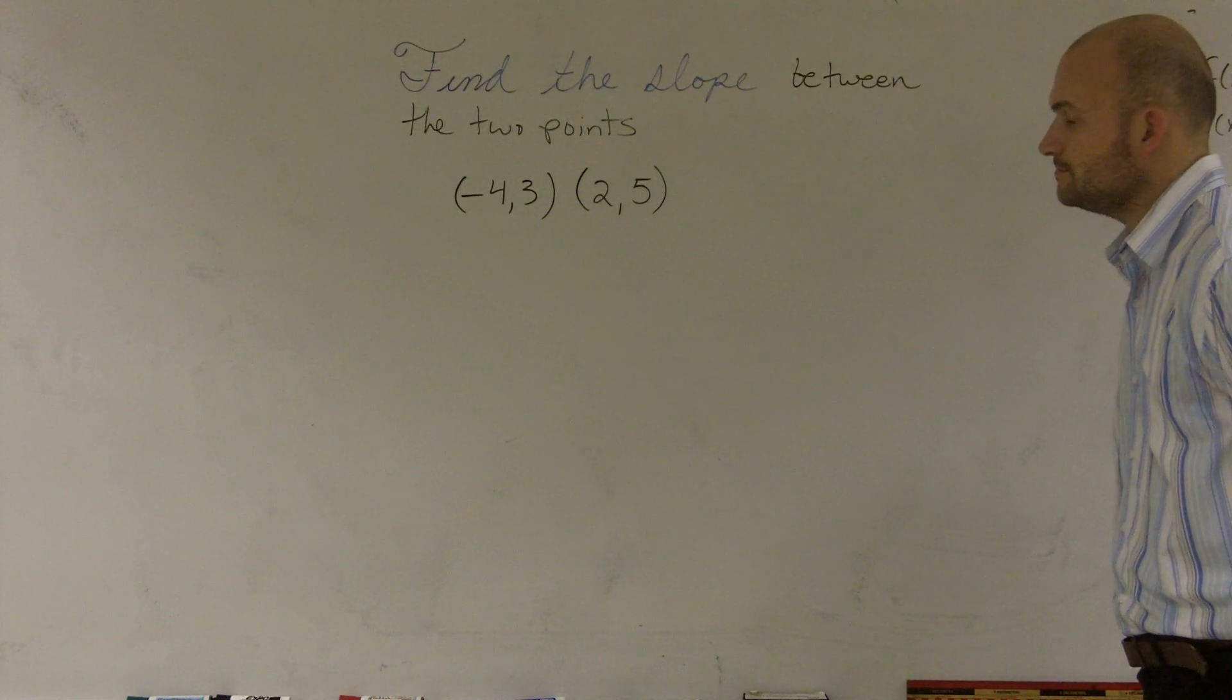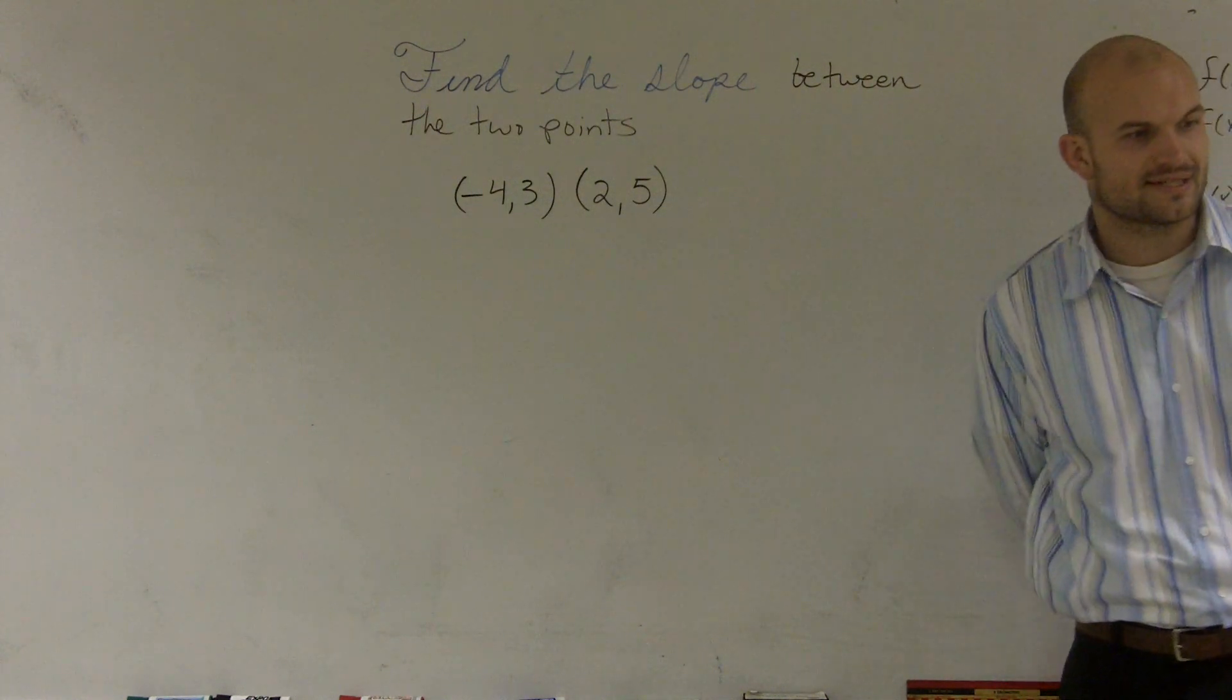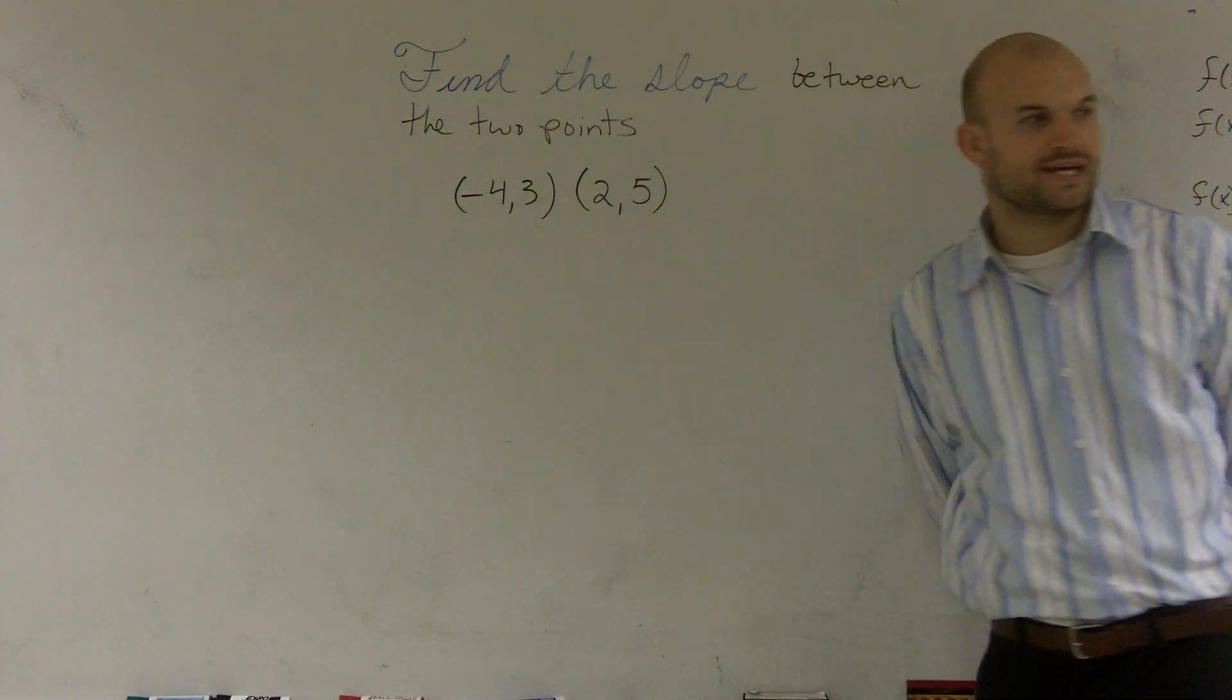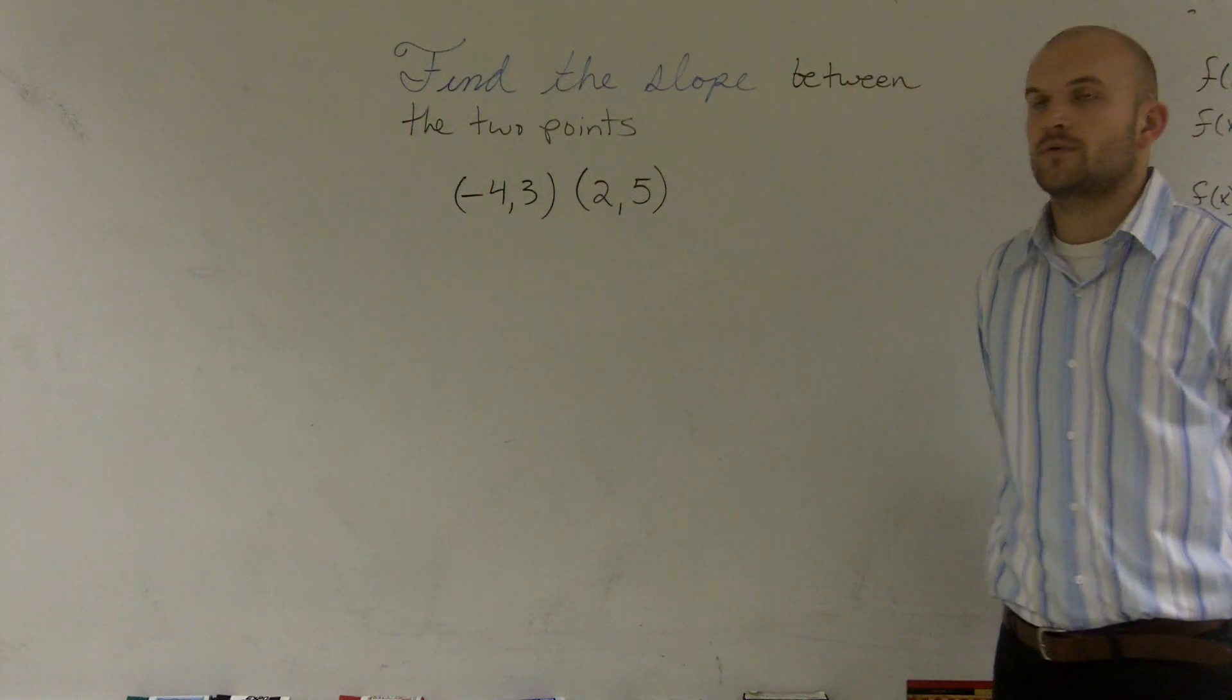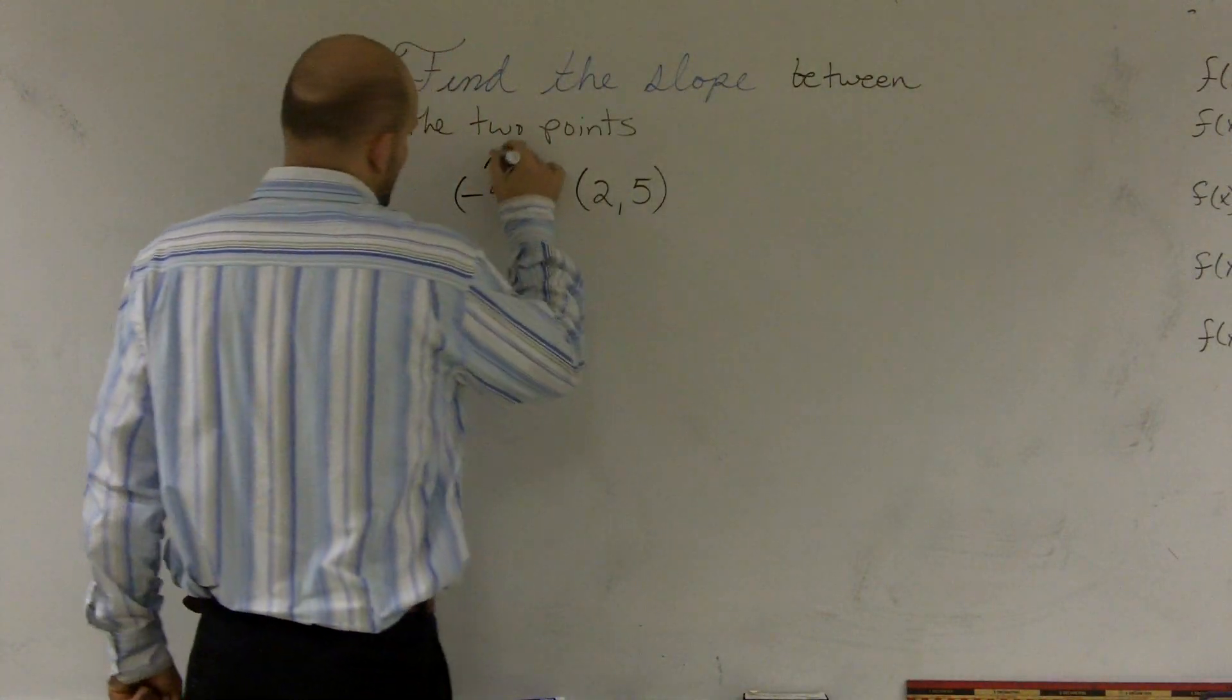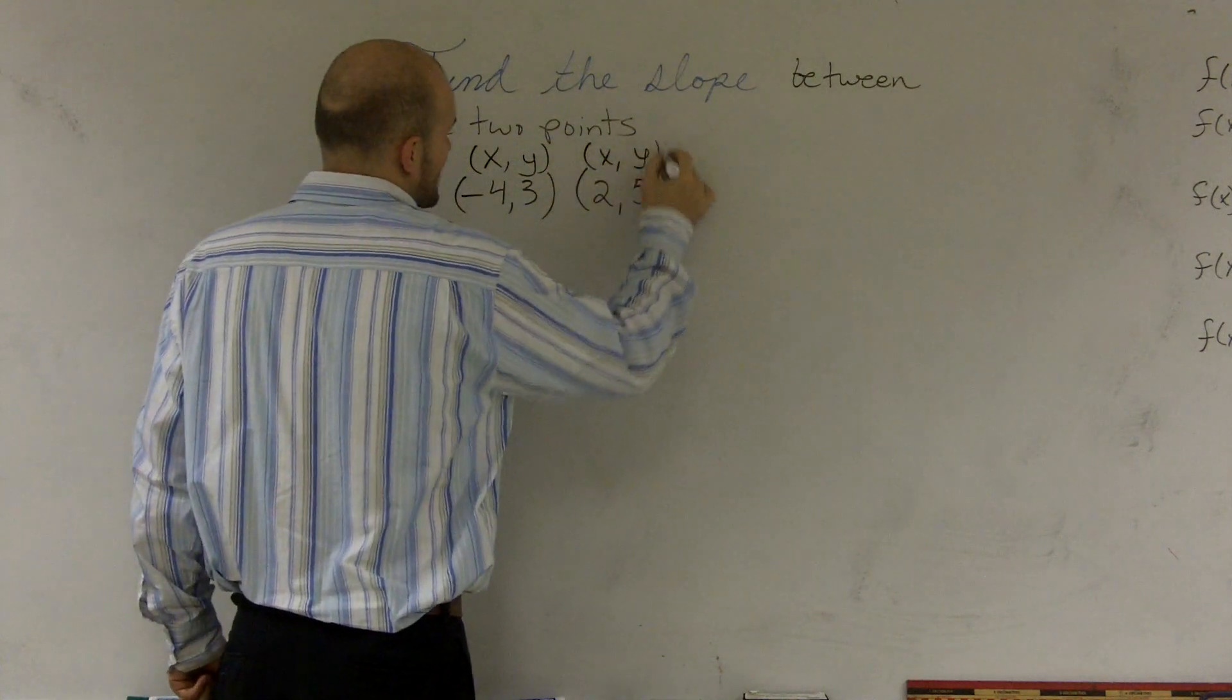So what I'm going to do is find the slope. What is the slope? Well, all slope is is a ratio between the change in y values over the change in the x values. So there's a couple ways we can kind of look at this. We know a coordinate point, or an ordered pair, is represented as an x and a y, right?